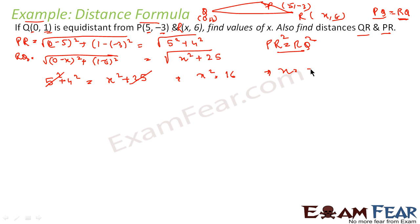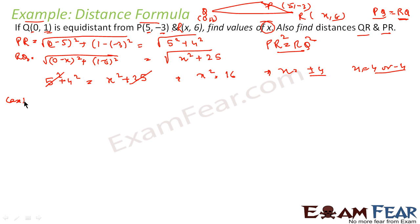Therefore x equals ±4. There are two possibilities: x = 4 or x = -4. So there are two cases — Case 1 where x = 4 and Case 2 where x = -4.